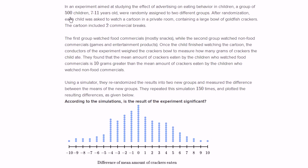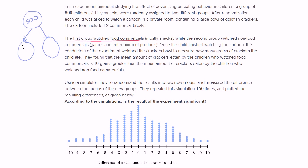Let's think about what happened up to this point. They took 500 children and randomly assigned them to two different groups — group one and group two. The first group watched food commercials. We could call this the treatment group, since we're trying to see the effect of watching food commercials. The second group watched non-food commercials, so this is the control group.